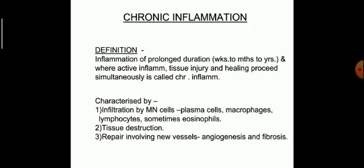So what is chronic inflammation? It is inflammation of prolonged duration that can last up to weeks, months, or years, and where active inflammation, tissue injury, and healing proceed simultaneously. It is characterized by infiltration of mononuclear cells — plasma cells, macrophages, lymphocytes, and sometimes eosinophils. In this inflammatory process, there is simultaneously tissue destruction, repair involving new vessels (angiogenesis), and fibrosis. So infiltration of cells, tissue destruction, and repair — destruction and repair go on simultaneously in chronic inflammation.